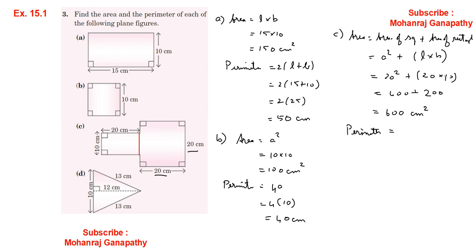For the perimeter of the combined figure, we add all outer sides: 20 + 20 + 20 + 20 + 10 + 20 + 10 + 20 — totaling 5 sides of 20 and additional segments. The perimeter works out to 110 centimeters.